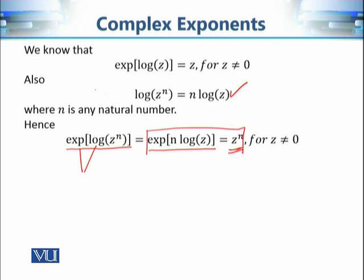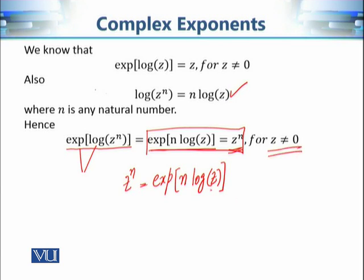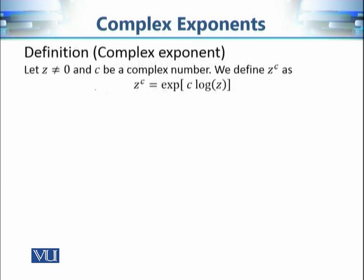So z raised to power n is equal to exponential of n times the complex logarithm of z, for any z not equal to zero, since we are applying log to z. This gives us one way to interpret z raised to power n, and we are going to use this interpretation to define the complex exponent. For any non-zero complex number z and any complex number c, we define z raised to power c as the exponential of c times log of z.